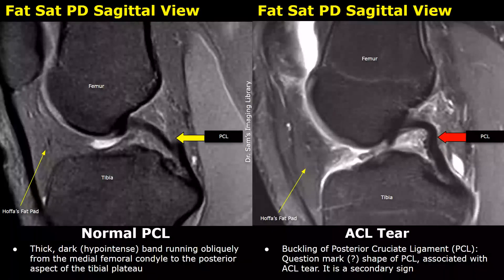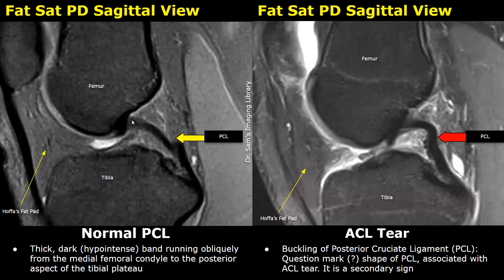Now we will look at some secondary and indirect signs of ACL tears. The appearance of the posterior cruciate ligament is also helpful in diagnosing ACL tears. In the image on the left, we can see a normal PCL — the posterior cruciate ligament — in sagittal plane. It appears as a hypointense band running obliquely from the medial femoral condyle to the posterior aspect of the tibial plateau.